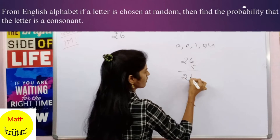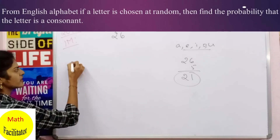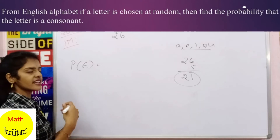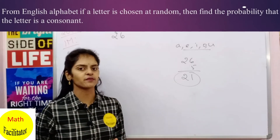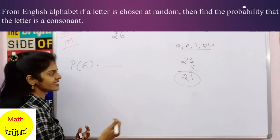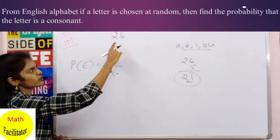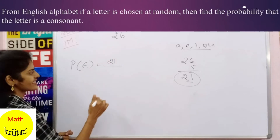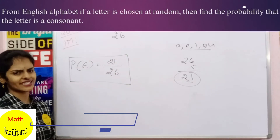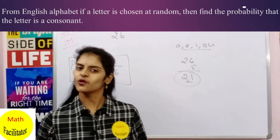All letters other than those five vowels are consonants. Probability is nothing but the number of favorable outcomes divided by the total number of outcomes. The number of favorable outcomes — that is, the number of consonants — is 21, and the total number of outcomes is 26. So the probability that a letter is a consonant is 21/26. Very simple — as I said, no calculations, no formulae, only logic.